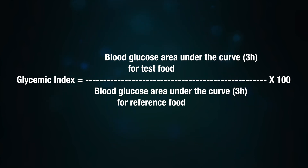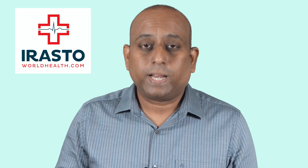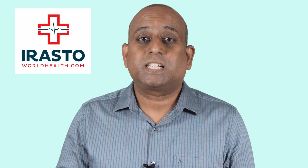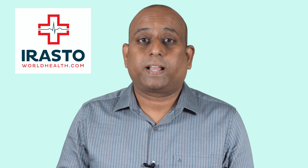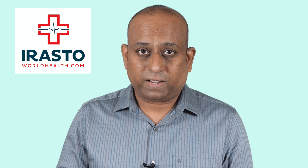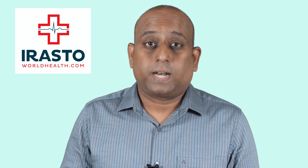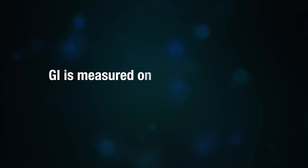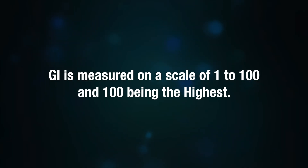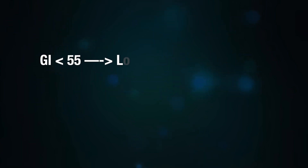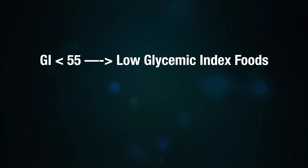After consuming 50 grams of the reference food, white bread. Eating low glycemic foods results in a lesser rise in blood glucose level after meals. High glycemic index foods raise your blood glucose level faster. GI is measured on a scale of 1 to 100, with 100 being the highest. Foods which are 55 or less are considered low GI foods.